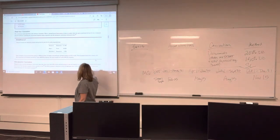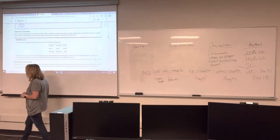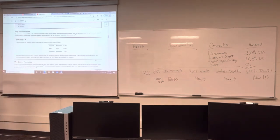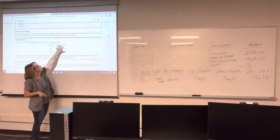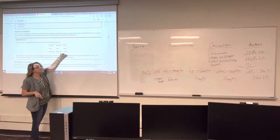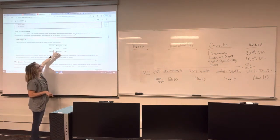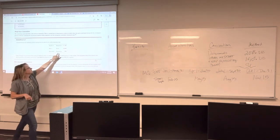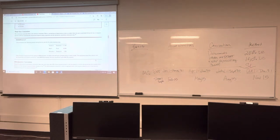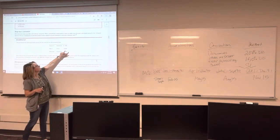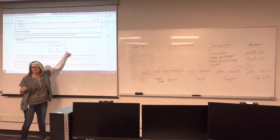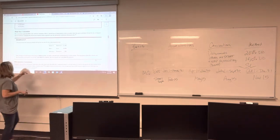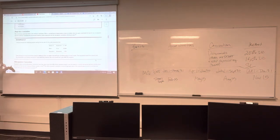The mid-quarter convention applies based on the aggregate basis of personal property placed in service. For example: equipment purchased January 6th for $7,400, equipment May 4th for $20,000, and equipment December 1st for $2,000 — totaling $29,400. Only $2,000 out of $29,400 was placed in service in the last three months, so you don't even need to do the math. They can use the half-year convention, and all items start depreciating July 1st.